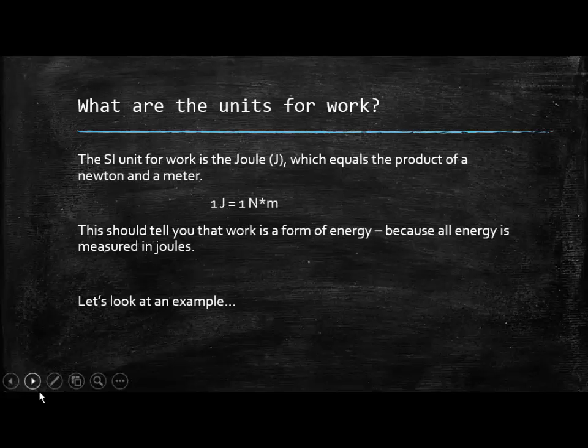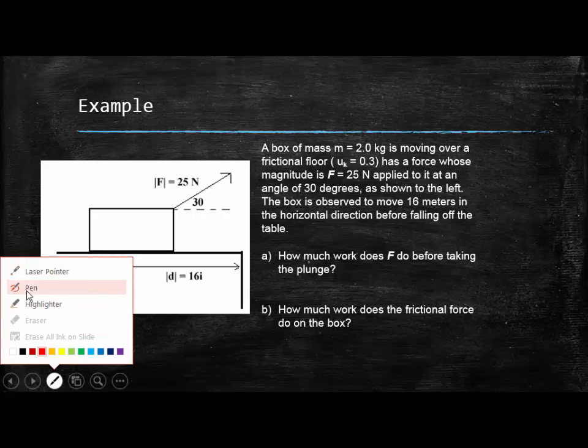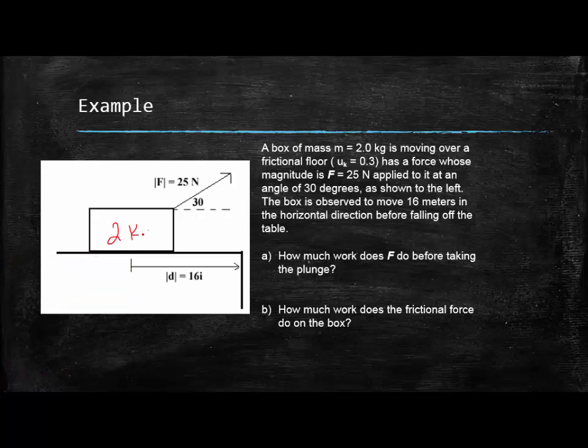So let's take a look at a mathematical example that we can do together. In this case we have a box here, mass 2 kilograms. This 2 kilogram box is moving over a frictional floor with the coefficient of friction of 0.3. It has a force whose magnitude is 25 newtons applied to it at an angle of 30 degrees. The box is observed to move 16 meters in the horizontal direction before falling off the table. So part A says how much work does the force do before taking the plunge?